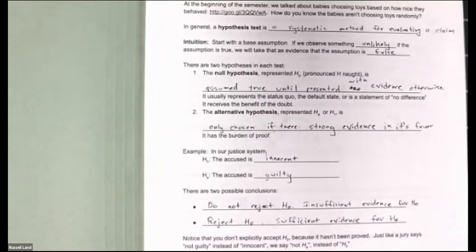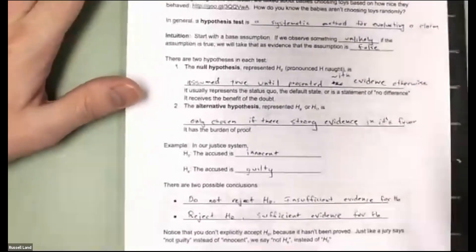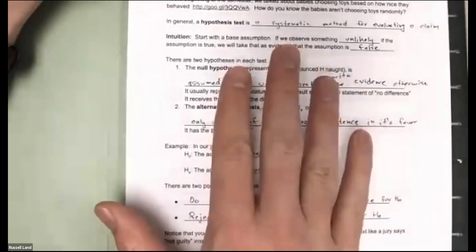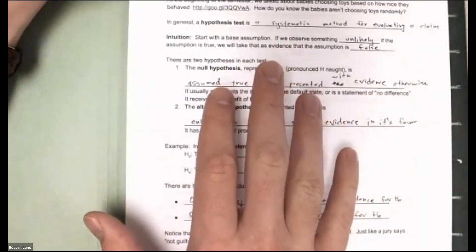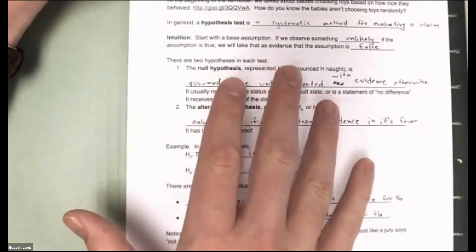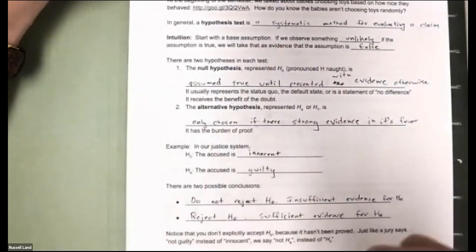Okay, so let's start Lecture 25: Basics of Hypothesis Testing. We've seen how to calculate statistics, we've seen how to find probabilities, we've seen how to find confidence intervals. Now we're going to look at hypothesis testing. How good are those statistics we calculated? Are they valid?